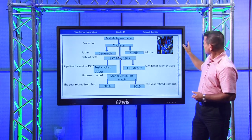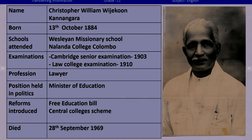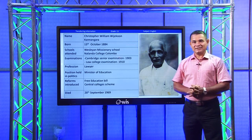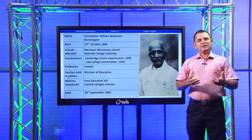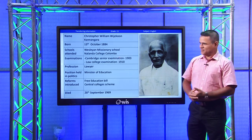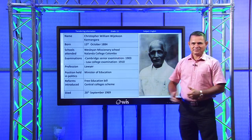Let us try another one similar to that. Do you know this person? All information about him is given in a table. Name: Christopher William Vijayakon Kannangara. Born — school attended. Earlier you were given a paragraph about Mahela Jayawardena; the information was in a paragraph. Now, about CWW Kannangara, everything is in a table.